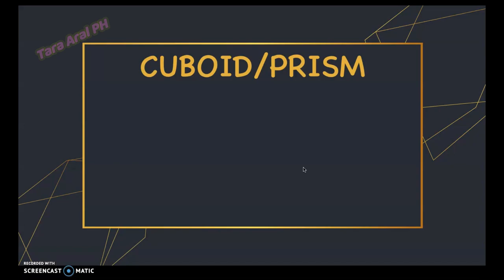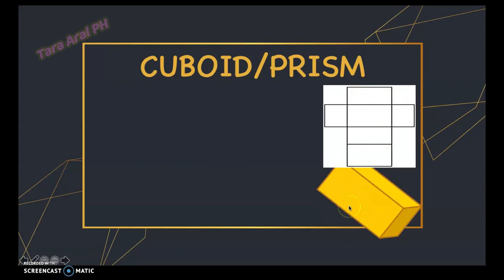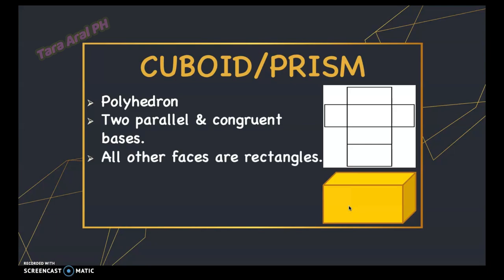Another one is a cuboid, or what we call a prism. This is similar to the cube, but the cube has the same length of edges while the cuboid has different sizes of edges. A prism or cuboid is a polyhedron and it has two parallel and congruent bases, and all other faces are rectangles. The base is the surface of the solid object that it stands on, and it can be on the bottom or both bottom and top.